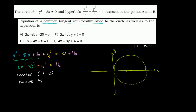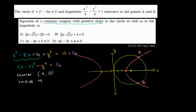So the hyperbola opens at plus 3 comma 0 to the right and at negative 3 comma 0 to the left. The points A and B where the circle and hyperbola intersect are likely those two intersection points. The question asks for a common tangent with positive slope to both the circle and the hyperbola.